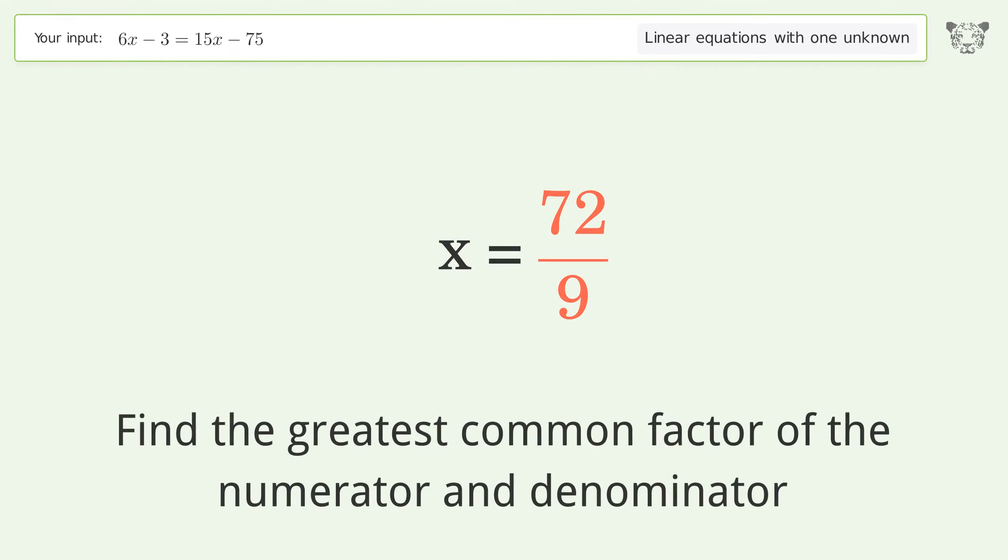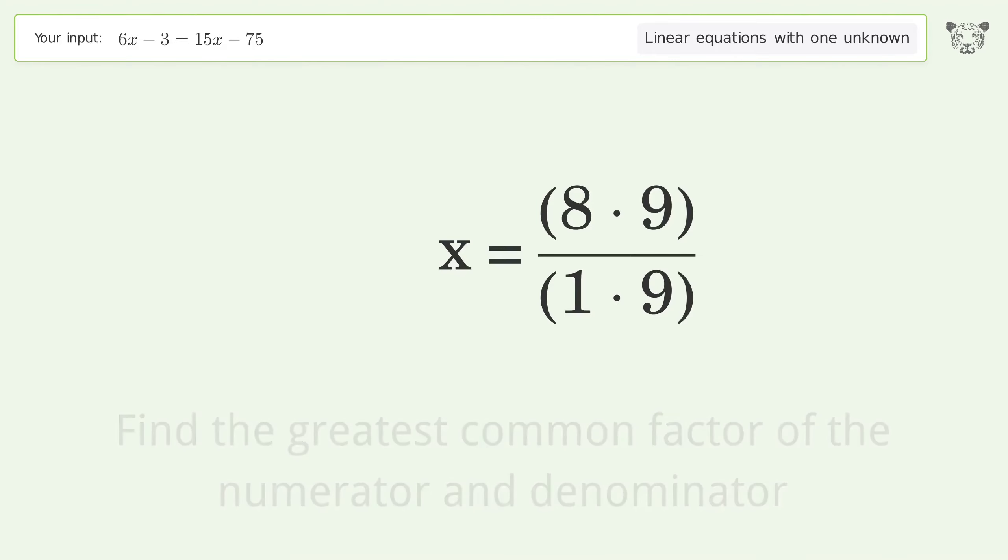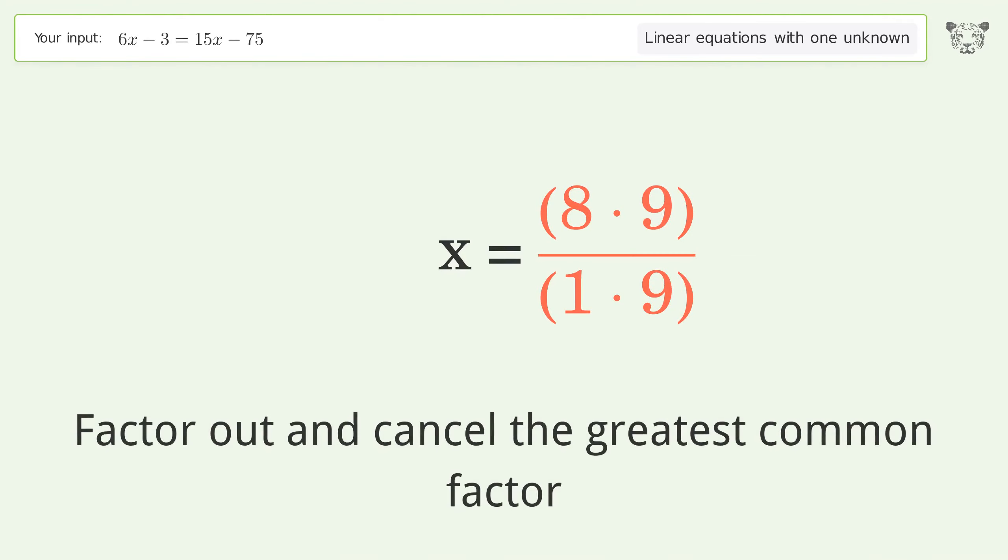Find the greatest common factor of the numerator and denominator. Factor out and cancel the greatest common factor.